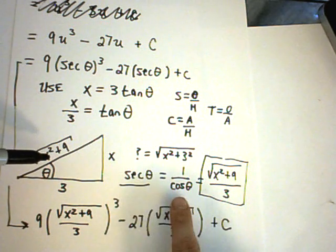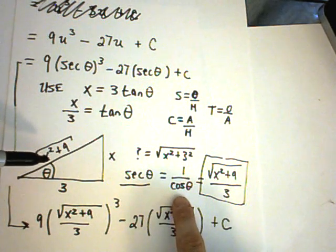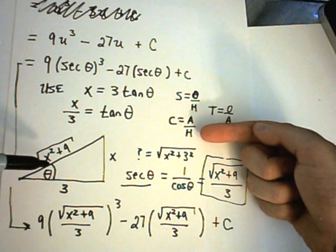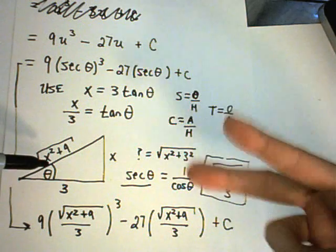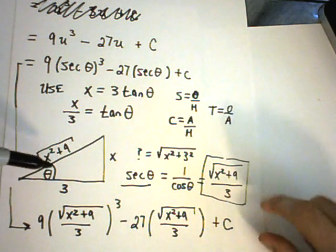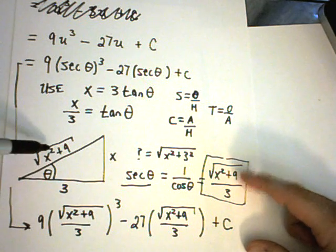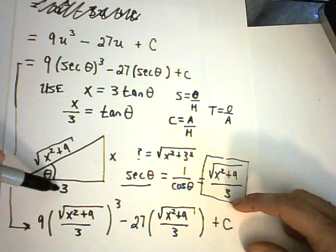Recall that secant theta is 1 over cosine theta. Since cosine is adjacent over hypotenuse, secant is the flip of that, or hypotenuse over adjacent. That's what I have for my right triangle. Secant theta will be the hypotenuse over the adjacent.